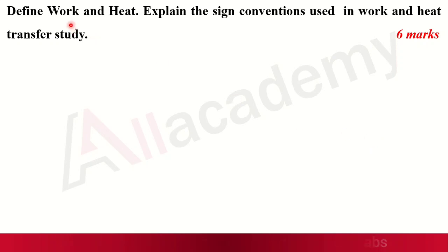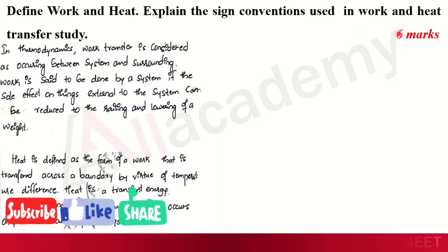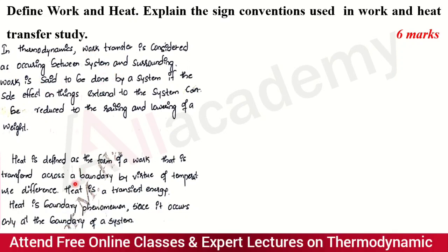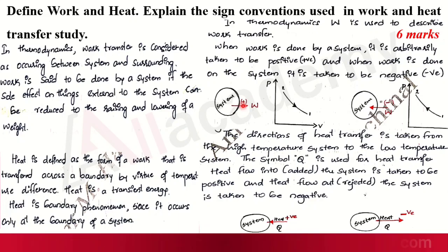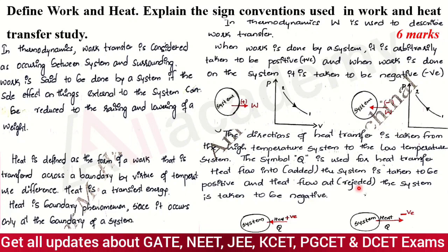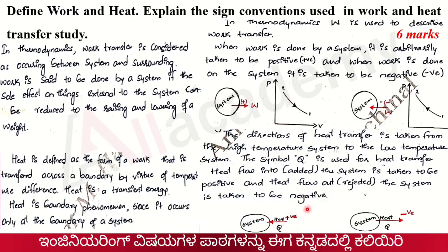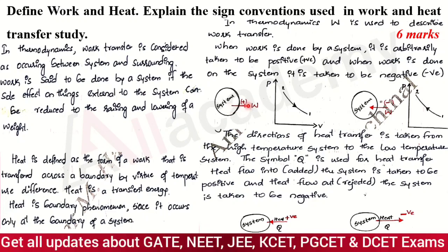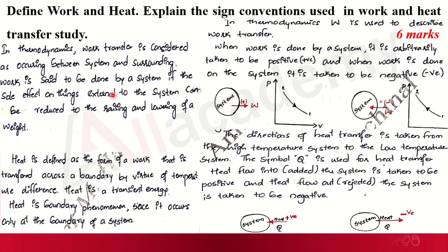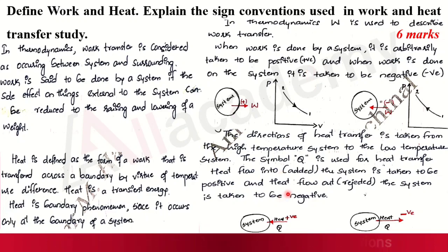The next question is: define work and heat, and explain the sign conventions used in heat and work transfer. This question is asked for six marks. You need to write the definition of work and heat, then explain the sign conventions — heat added to the system is positive, heat rejected is negative, work done by the system is positive, and work done on the system is negative. Draw the sign convention diagrams. Marks: one mark each for the definitions, two marks for sign conventions of work, and two marks for sign conventions of heat.